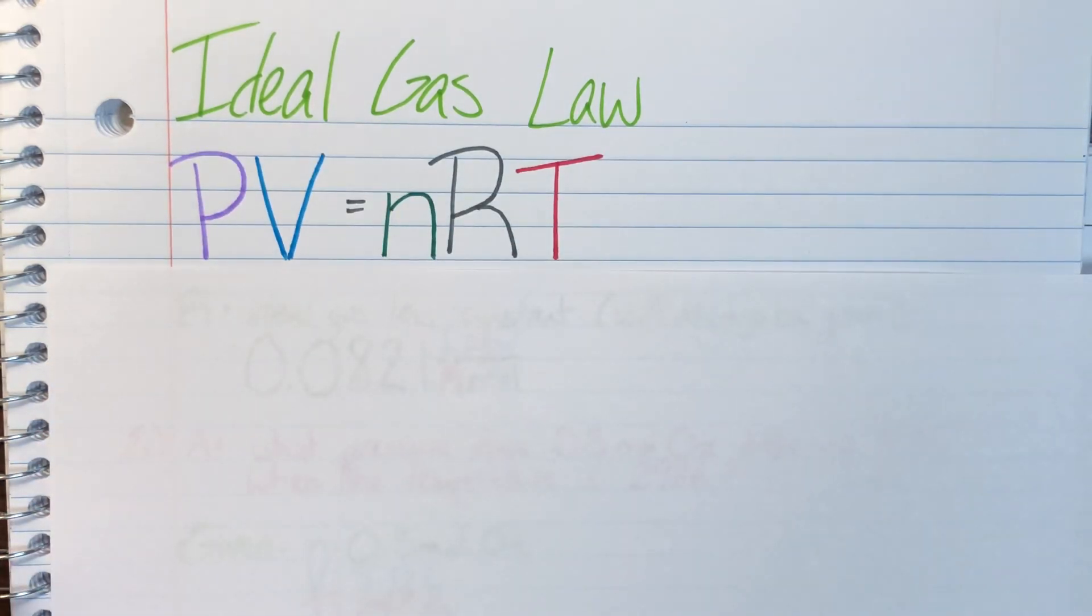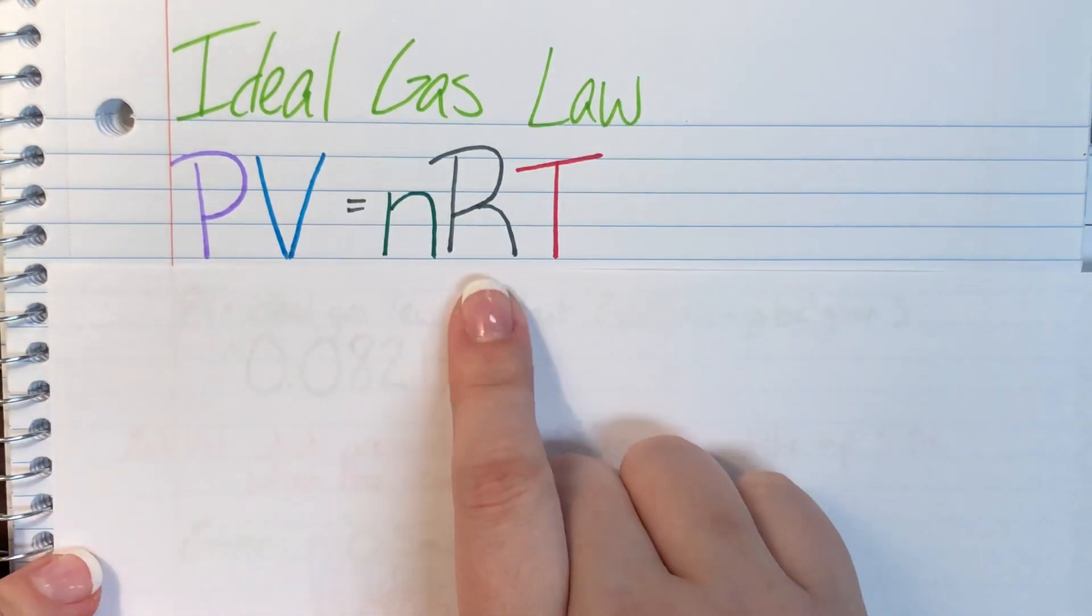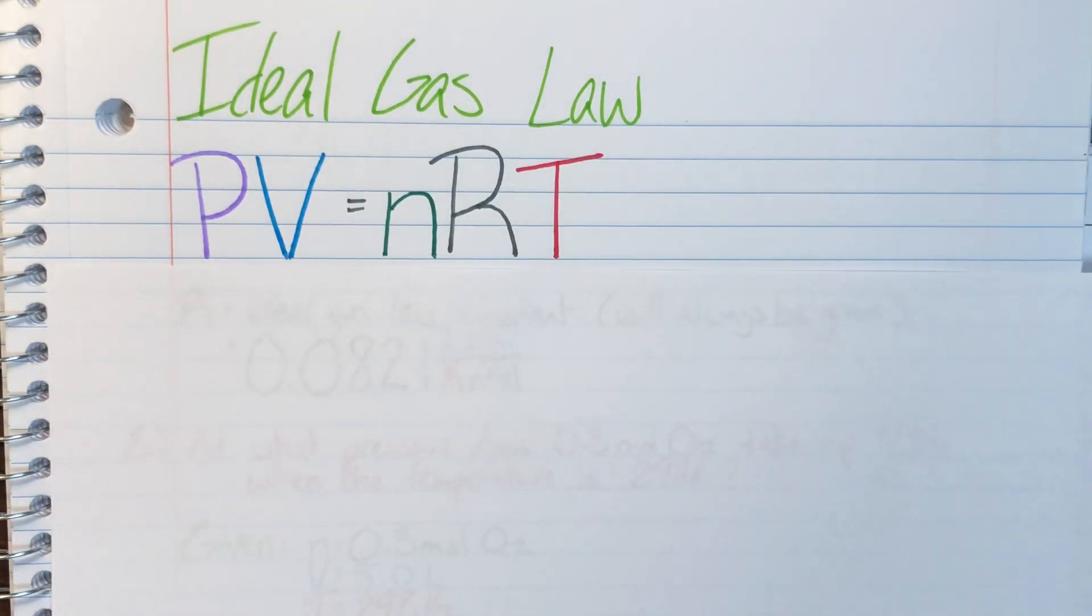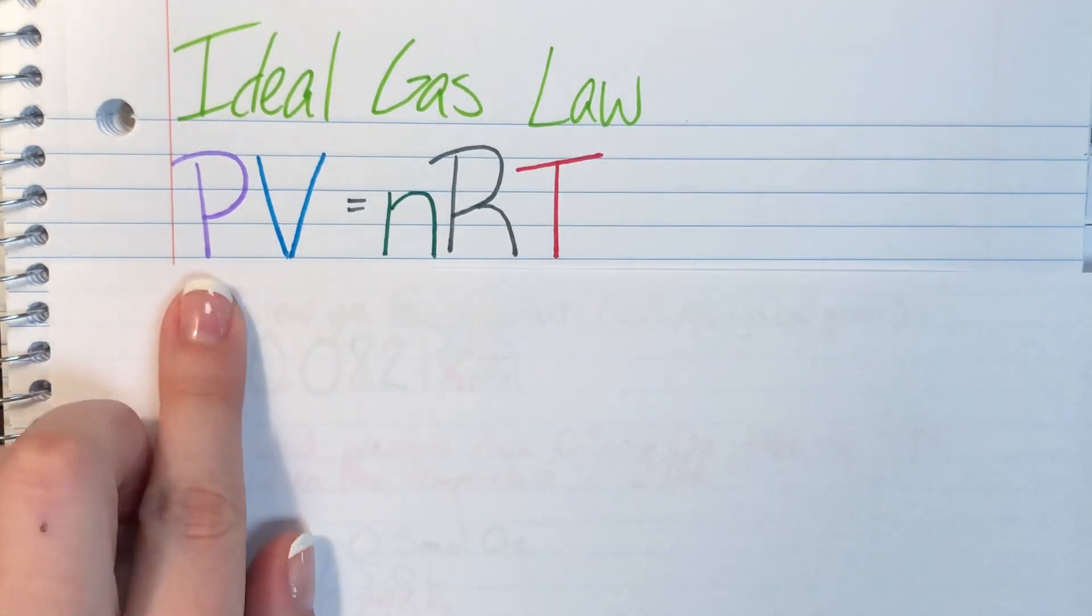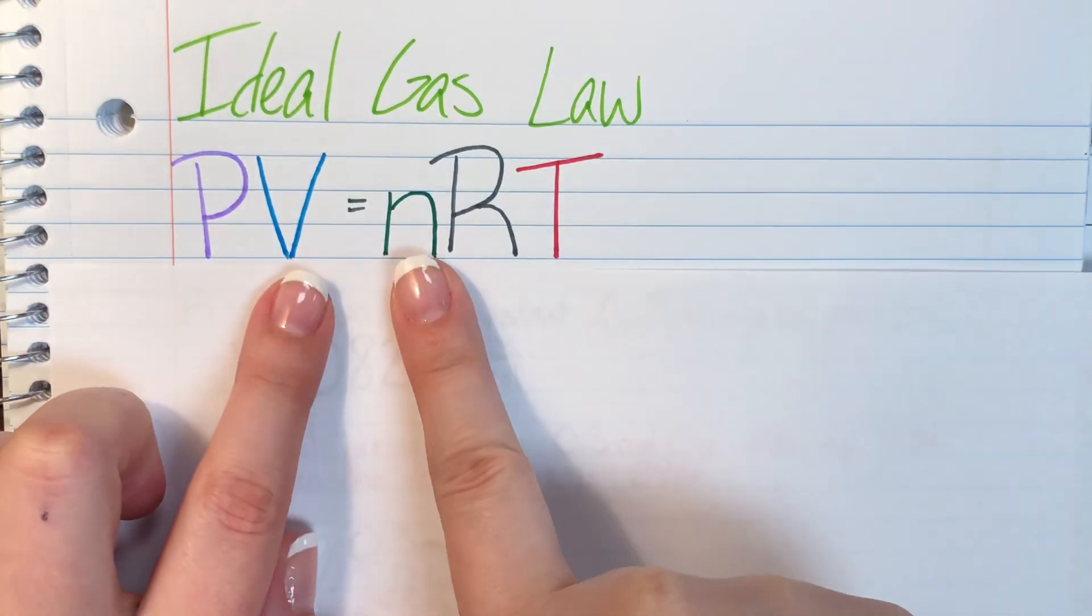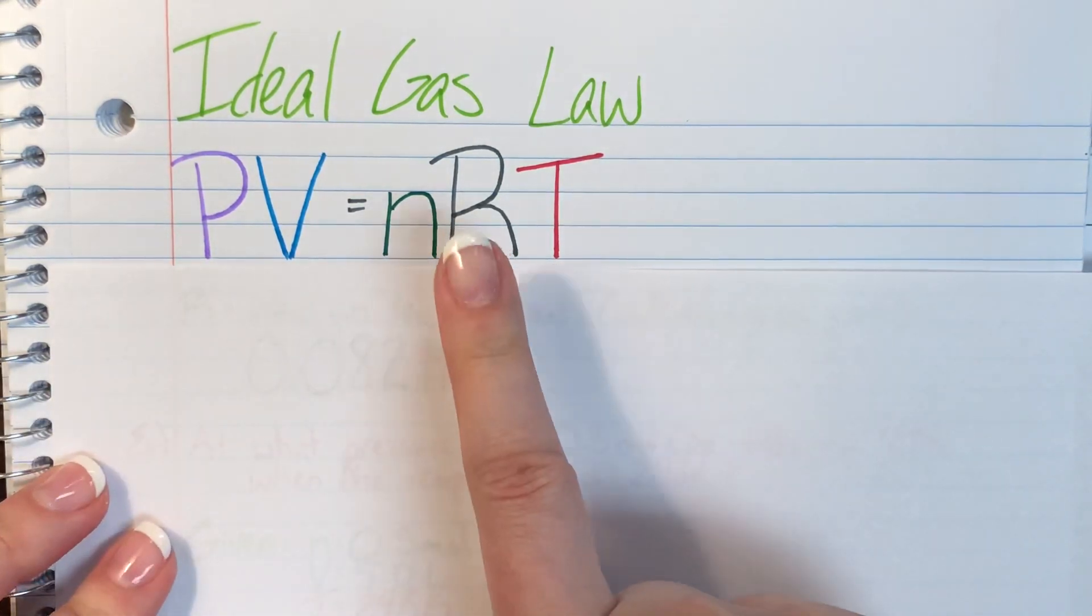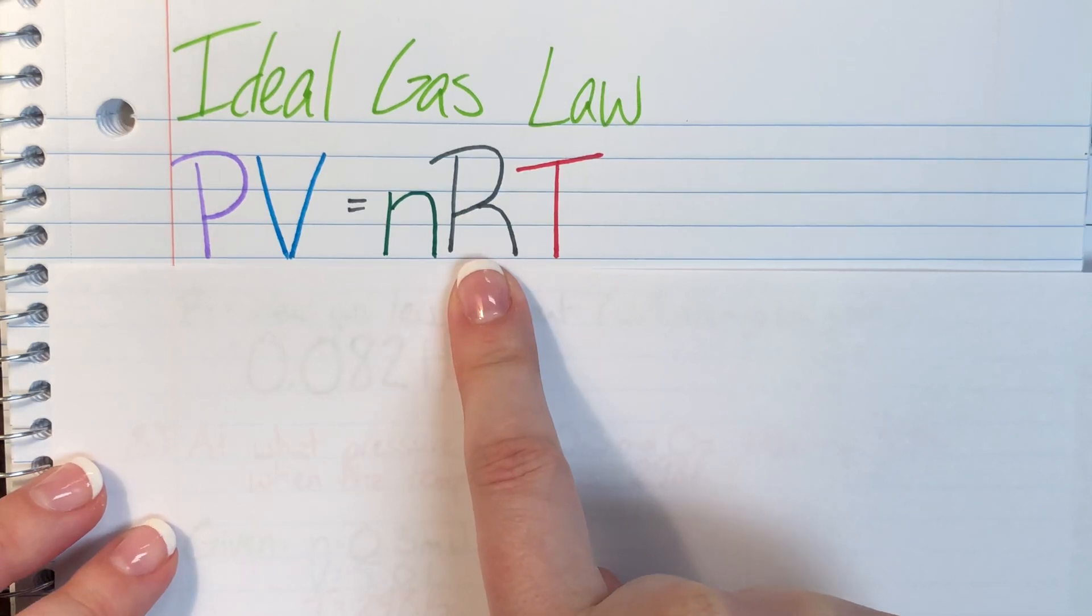We have PV equals nRT. We already know what P, V, n, and T mean from the kinetic molecular theory notes. We have P for pressure, V for volume, n for the number of moles, and T for temperature.